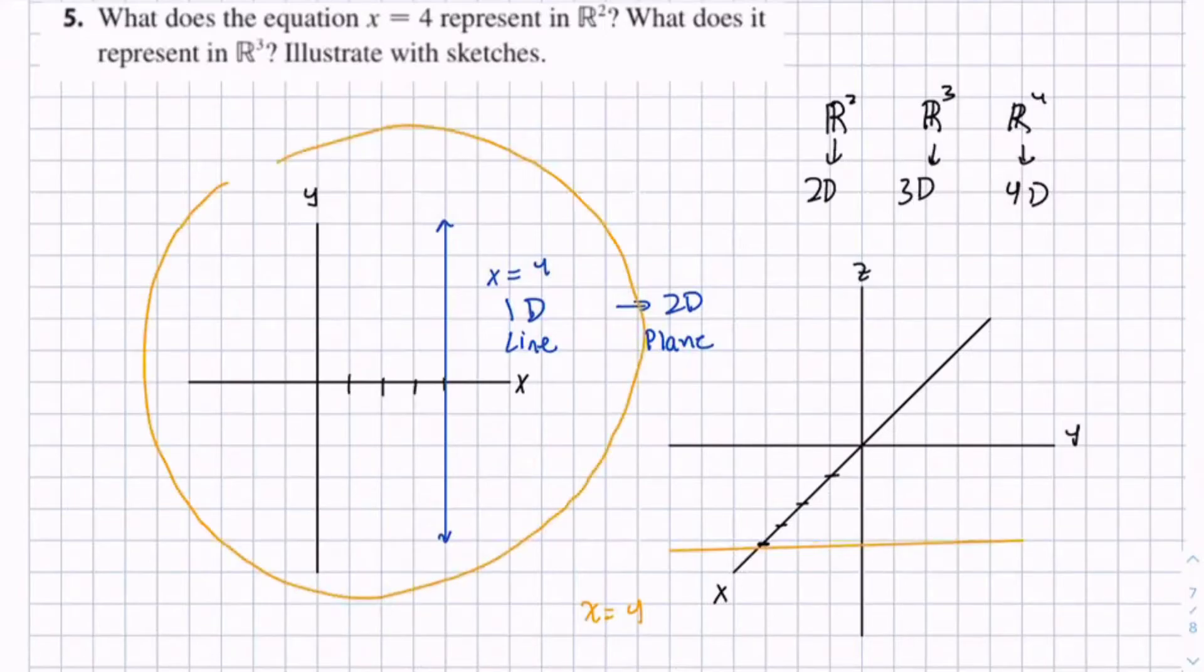However, since we have that z-axis, this line is going to go up forever and down forever, which creates that plane.